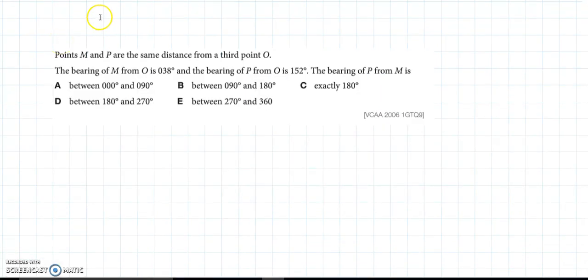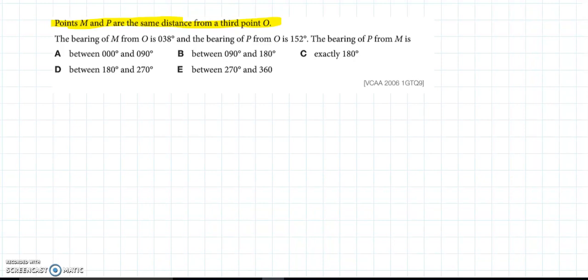Alright, once again, second question. Have a read of it. Have a go at it yourself. If you get the answer C, you're wrong. So, listen to my explanation. Note that it is a question 9, so it makes it a harder question. With these type, where a diagram is not given, then an accurate diagram is absolutely vital. So, here, we're told that M and P are exactly the same distance from the third point O. So, it feels like O is going to be our central point.